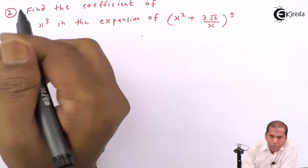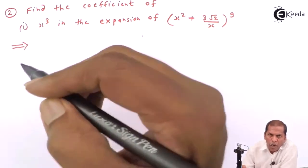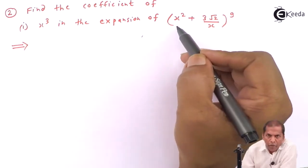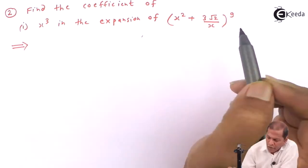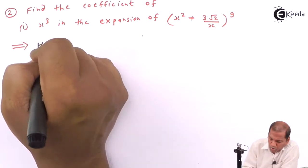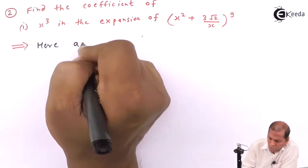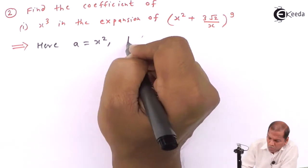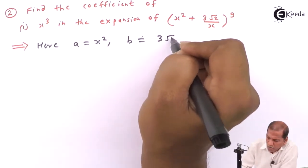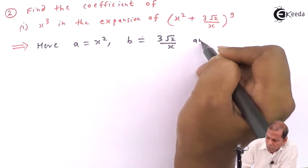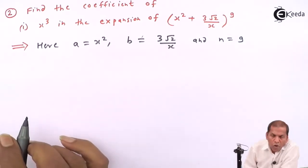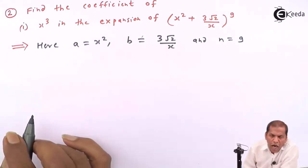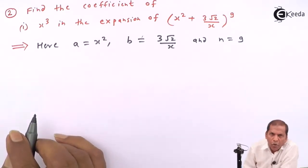Now let's see the solution. First of all, here we have a is equal to x squared, b equal to 3 into root 2 upon x, and n equal to 9. The formula for general term is T(r+1) is equal to nCr into a raised to (n minus r) into b raised to r.